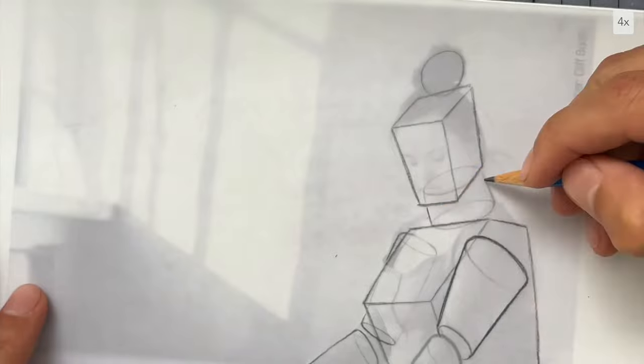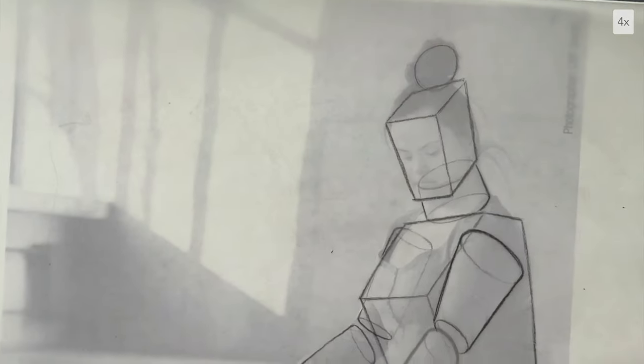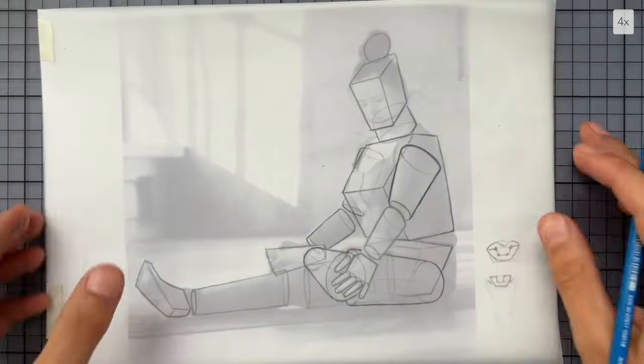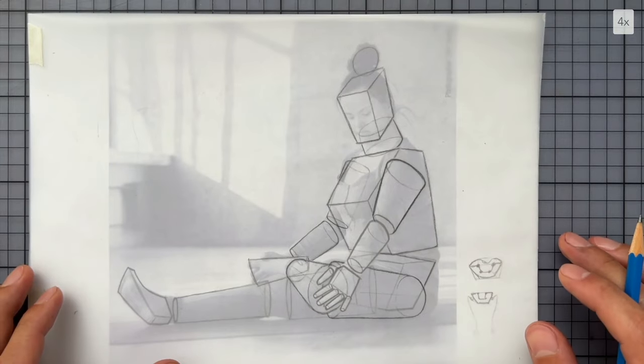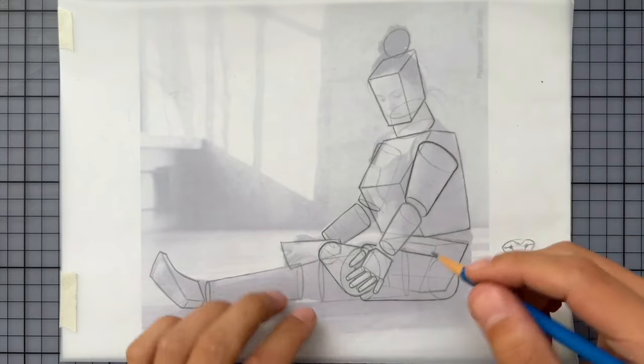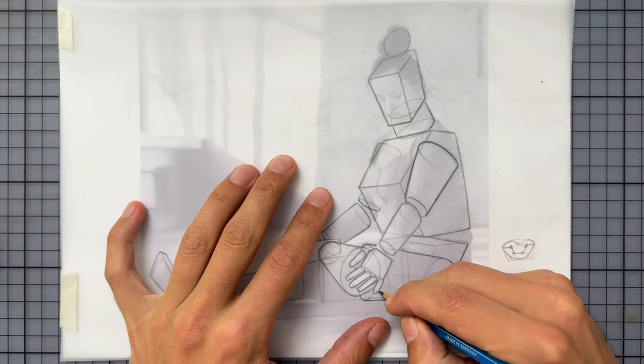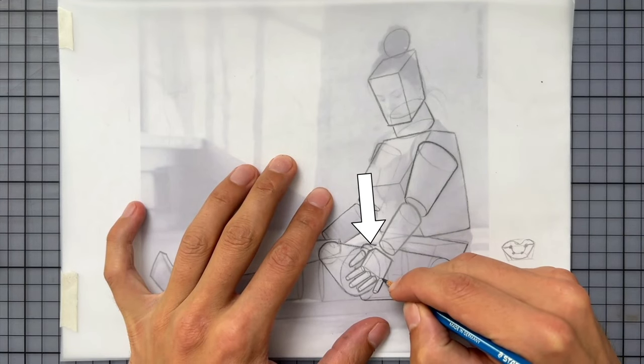Alright, I think that is pretty much it for establishing the forms. I'm now going over all of the drawing again, to make sure that the hierarchy of line weights is working. The element closest to the viewer is that hand. So I'm making sure that the darkest, thickest lines will be here.